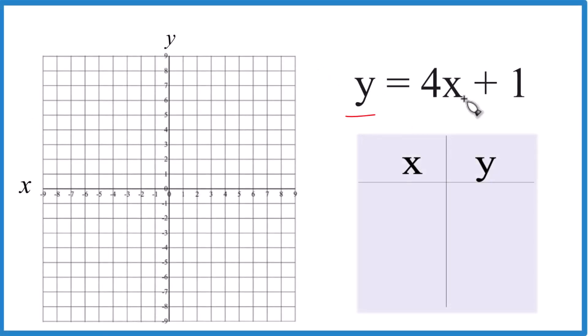So here's how you graph the line y equals 4x plus 1 using a table of values. If you need to do this with slope-intercept form, there's a link in the description and at the end of this video.